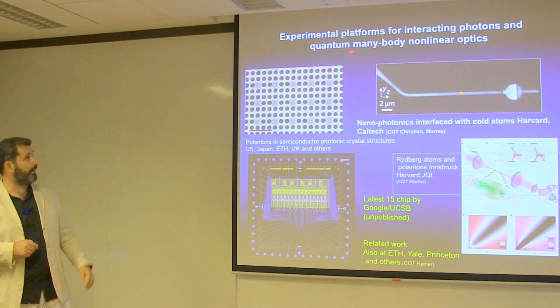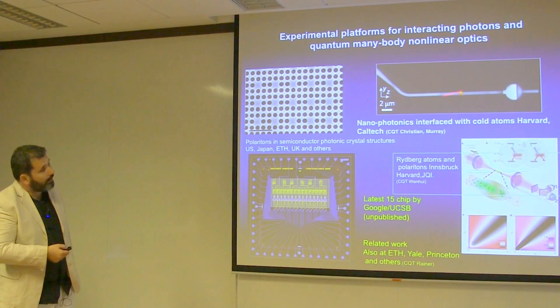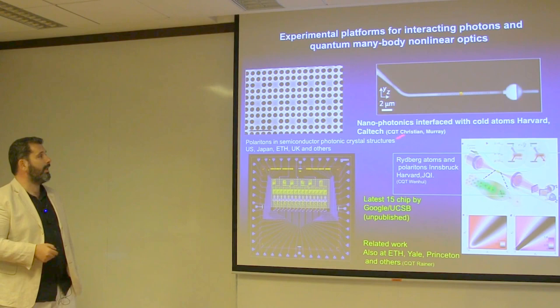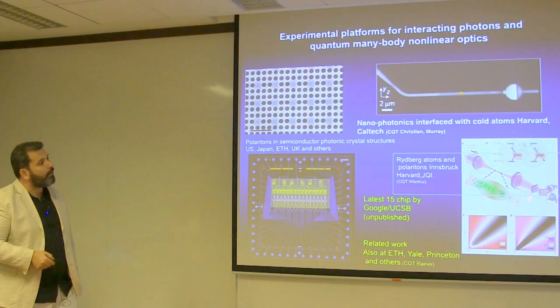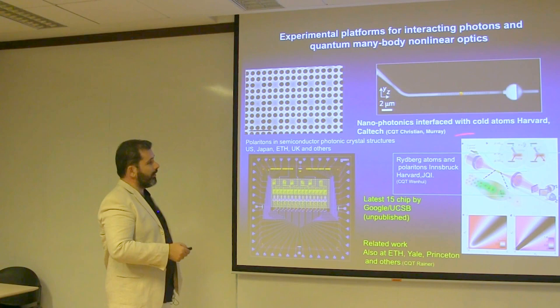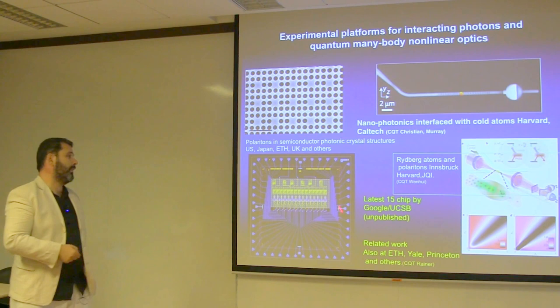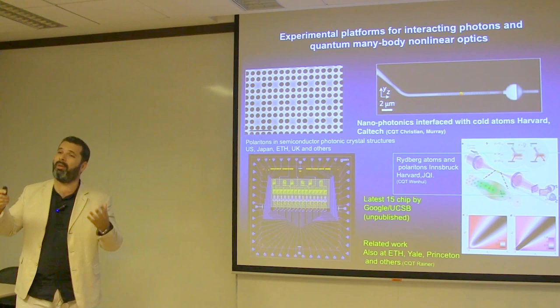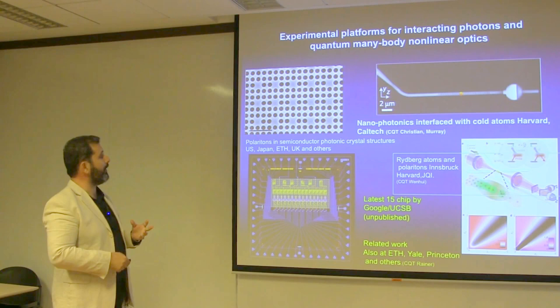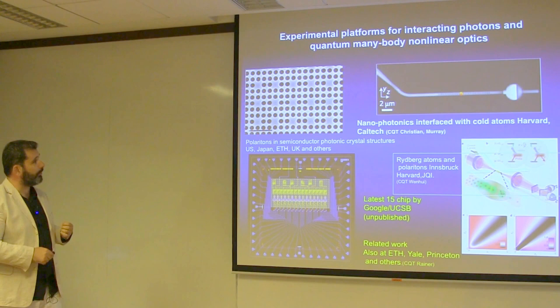The whole point is that if you want to use photons or polaritons as the main player, you need to get them to interact strongly. One way is to use Rydberg atoms — there is activity at CQT on that. Or get atoms to talk strongly via evanescent modes of a photonic crystal. Or use the superconducting approach where you have microwave photons and effective light-matter interactions. This is the area we'll focus on in the main part of the talk.